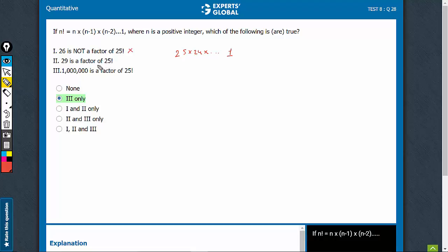29 is a factor of 25. 29 is a prime number greater than 25. So of course, this is not going to lie anywhere in this product. Therefore, no, 29 is not a factor of 25. This statement is also incorrect.